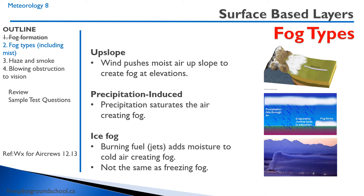Next, we have precipitation-induced fog. Sometimes the air has high relative humidity, it starts to rain, and as this rain falls, it evaporates, raising the localized relative humidity. Once it hits 100%, the water vapor will condense again and form water droplets. So you'll end up with fog in the vicinity of precipitation.